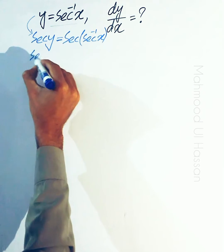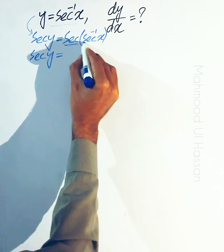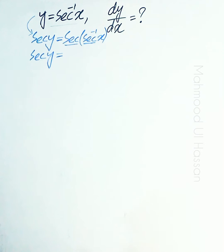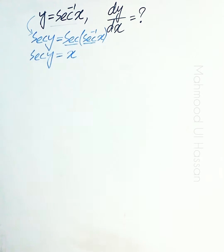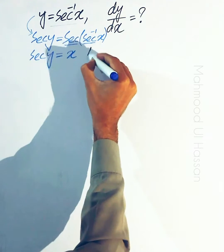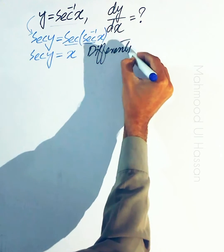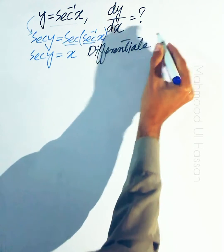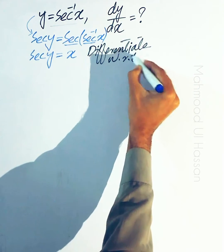Here, secant y is equal to secant of secant inverse — and since secant and secant inverse are inverse functions, they cancel, giving us x. Now differentiate with respect to x.